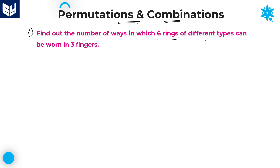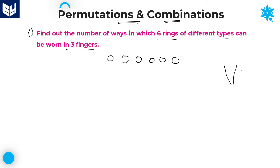This kind of problem is very important and so many students will be confused at this point. Let me tell you how to solve this. We have six rings of different types, and we need to find the number of ways they can be worn on three fingers.